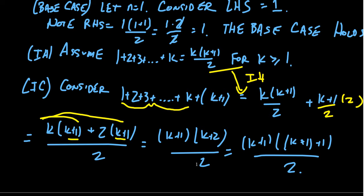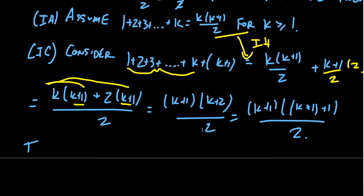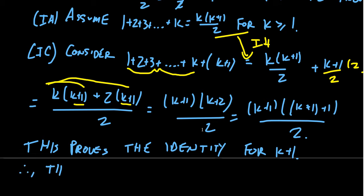And so then we'll make a comment about this. So this proves the identity for k+1. We've now finished the inductive case, this inductive hypothesis. So then we'll say something like the following: therefore the result follows by induction. And then to finish your proof, you're going to draw your little tombstone right there.